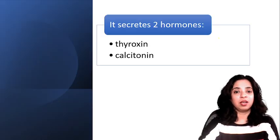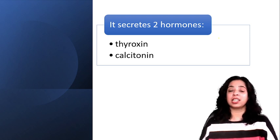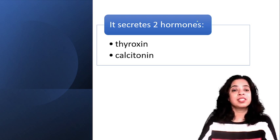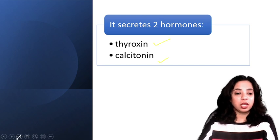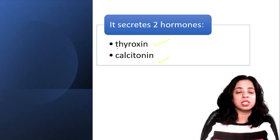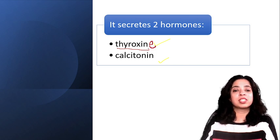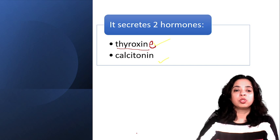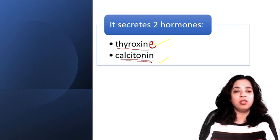This thyroid gland secretes two hormones: first is thyroxine and next is calcitonin. In many textbooks you will see different spellings of thyroxine — both are correct, but we write it as 'thyroxine' with an 'e'. Remember that calcitonin is not in our portion right now; it is not in our syllabus. We have to study only thyroxine.